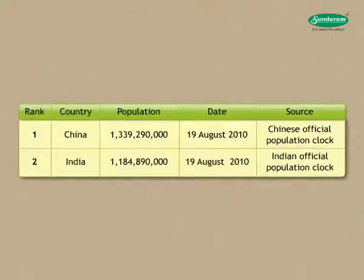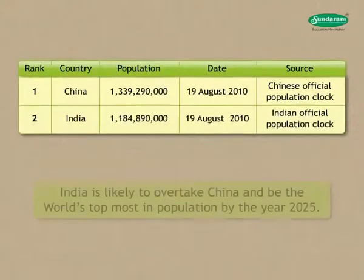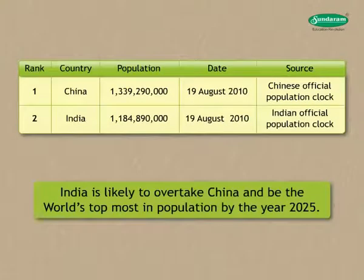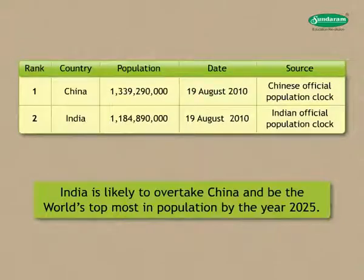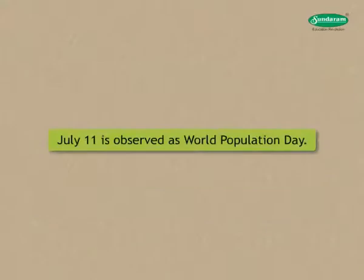The population of the world reached 7 billion in 2011. With the present trend of population growth, India is likely to overtake China and become the world's most populous country by the year 2025. July 11th is observed as World Population Day.